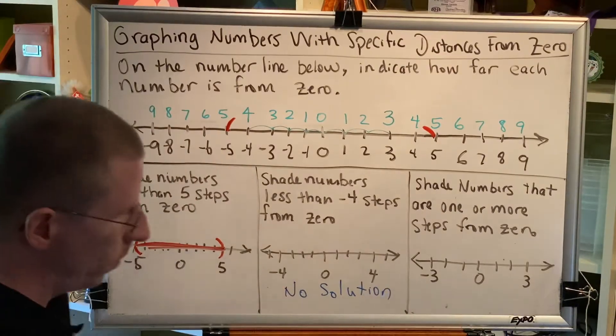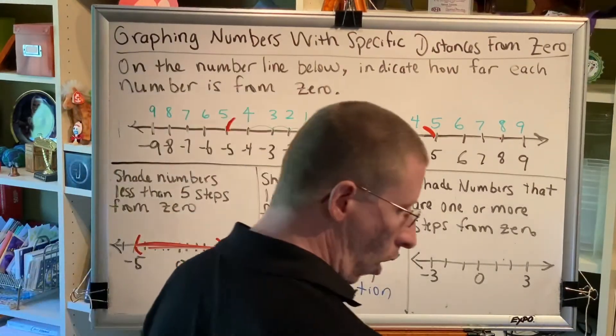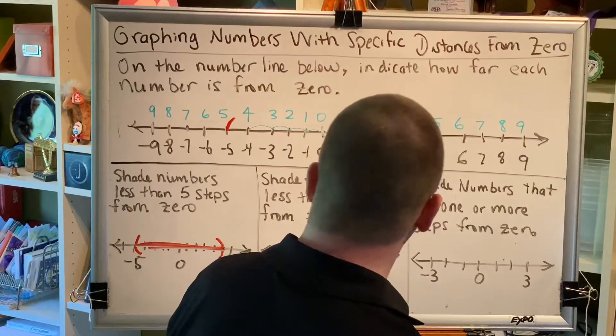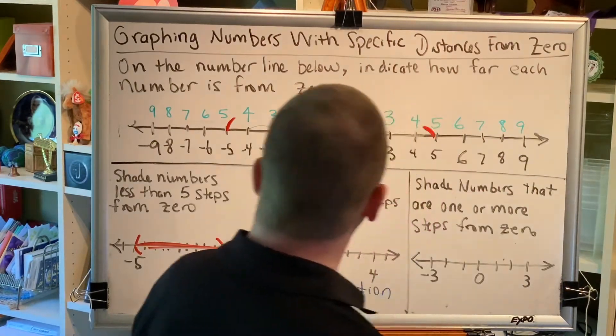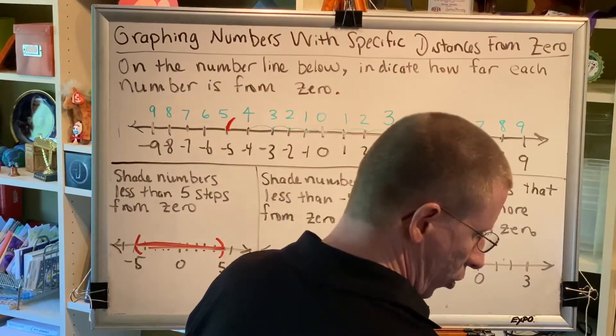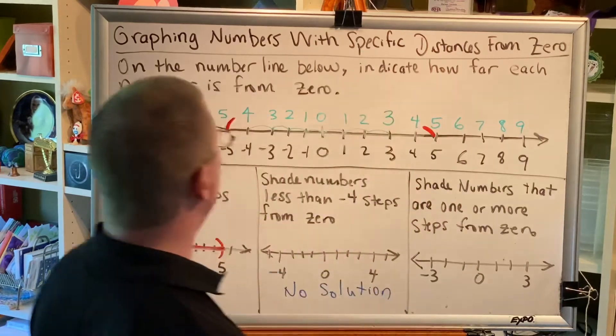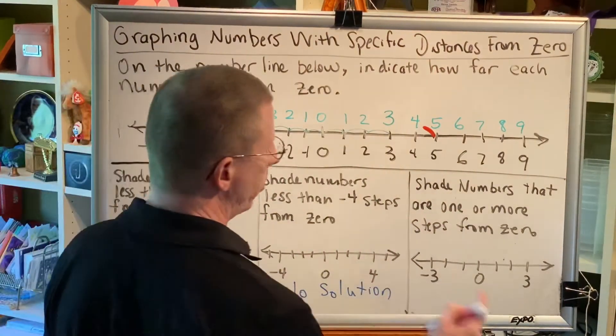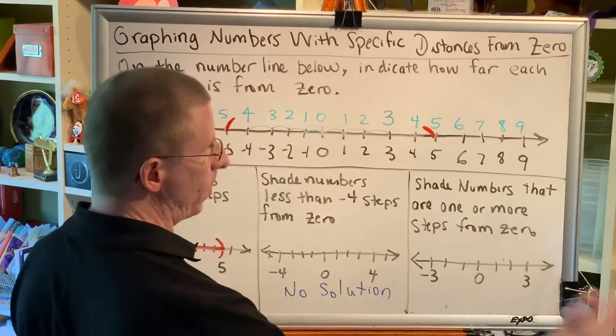Which brings us to our third problem. Shade the numbers that are 1 or more steps away from zero. Alright, let's do that. So that means that starting at zero, you travel 1 step to the right and then keep going.